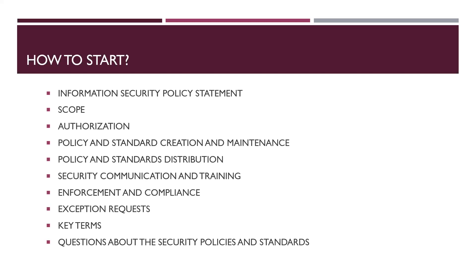Every application has a different way of configuring these settings. In that case, you can mention that this document, along with any subordinate policy, standard, procedure, and guidelines, sets a clear direction for information security supported by business objectives. You can also mention what standards you are referencing — for example, if you are referencing the NIST standard (National Institute of Standards and Technology), you should mention the specific version, such as SP 800-14.